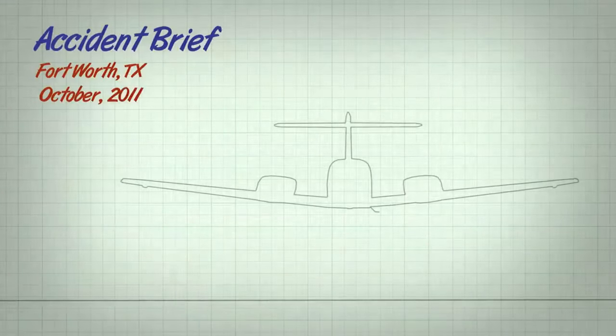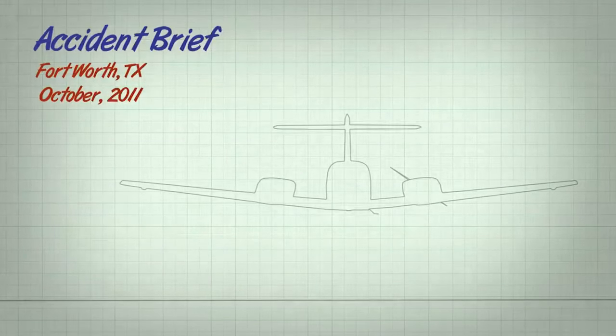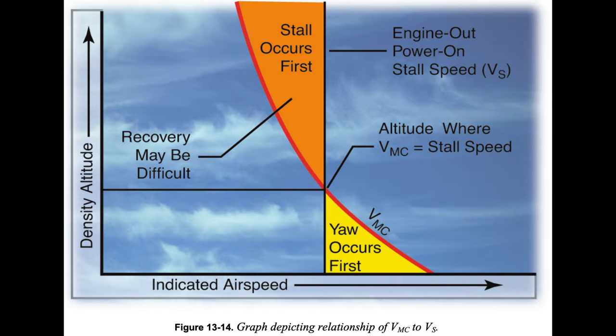VMC Demo Stall Avoidance. With normally aspirated engines, VMC decreases with altitude. Stalling speed, VS, however remains the same. Except for a few models, published VMC is almost always higher than VS at sea level. There is usually a margin of several knots between VMC and VS, but the margin decreases with altitude, and at some altitude VMC and VS are the same. Should a stall occur while the airplane is under asymmetrical power, a spin entry is likely.